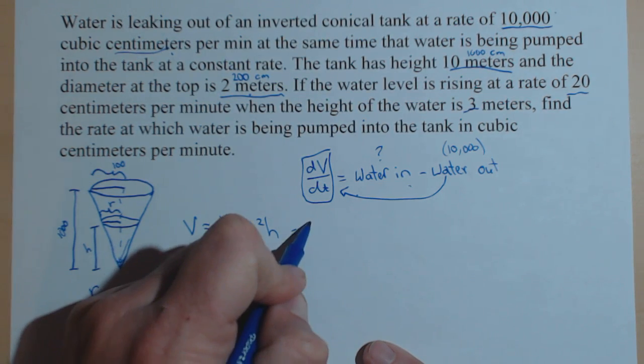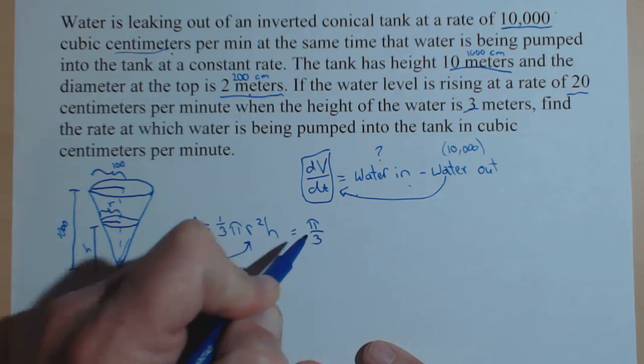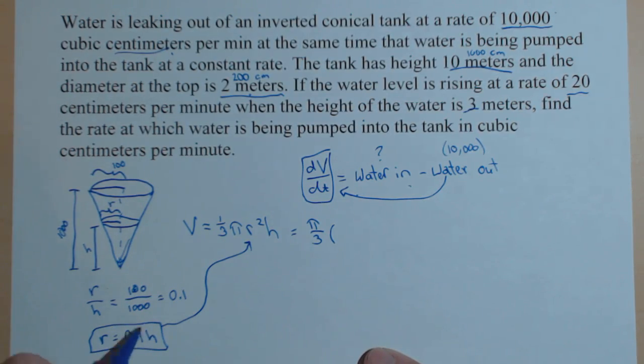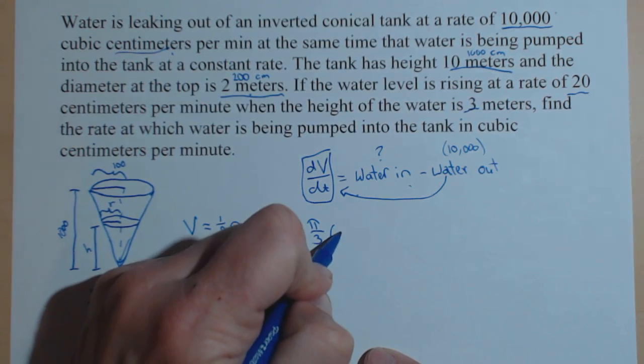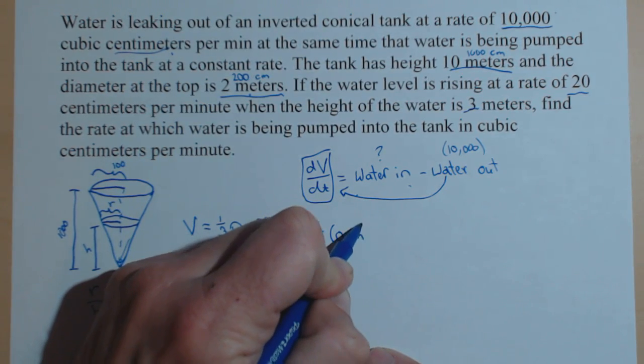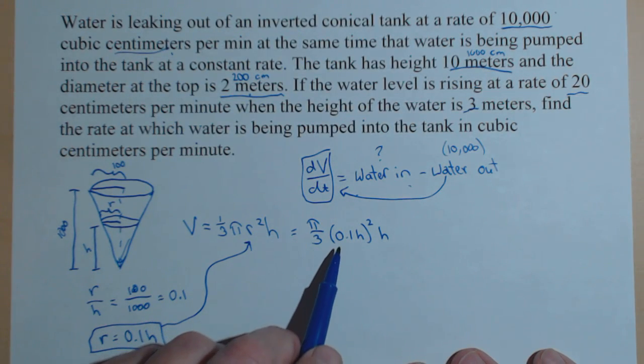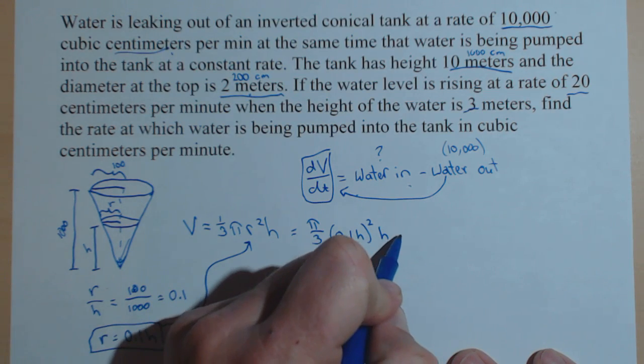So, let's go ahead and do that. And I will write the π over the 3 just to have less writing. Now, something that gets missed a lot on this. This whole 0.1 h is going in for r. So, that all needs to be squared. That's a very common mistake on these kind of problems.